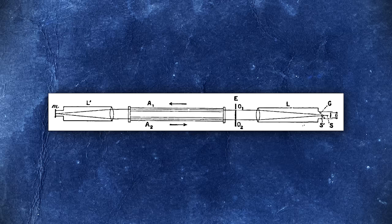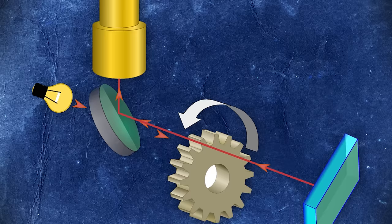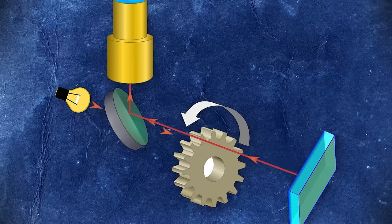From this point on, further refinements to the speed of light were largely made using Earth-based equipment. One of the first such experiments was carried out in 1849 by French physicist Armand Hippolyte Fizeau. In Fizeau's experiment, a beam of light was passed through a rotating toothed wheel, bounced off a mirror eight kilometers away, and passed back through the wheel. By adjusting the speed of the wheel so the beam passed through a gap on the way out but was blocked by the adjacent tooth on the way back, Fizeau could calculate the speed of light — yielding a value of 315 million meters per second.